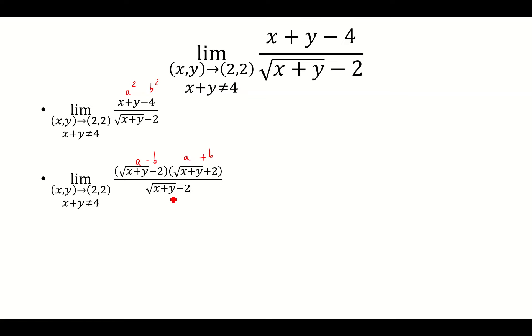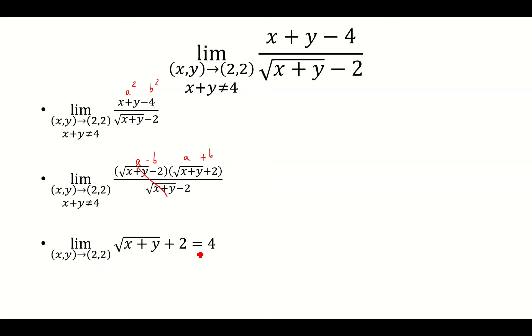So now the square root of x + y minus 2 is going to cancel, and we're left with the square root of x + y plus 2. Then we plug in x as 2 and y as 2, and end up with 4 as our limit.